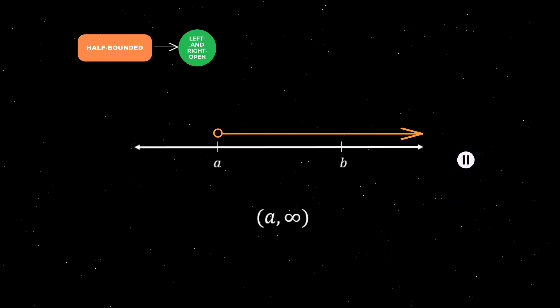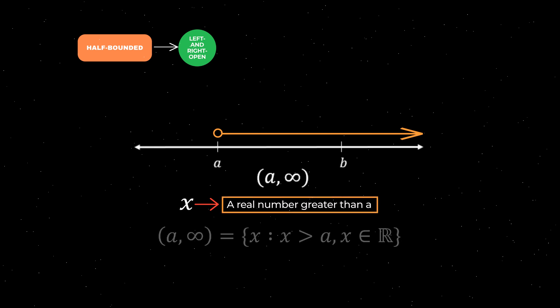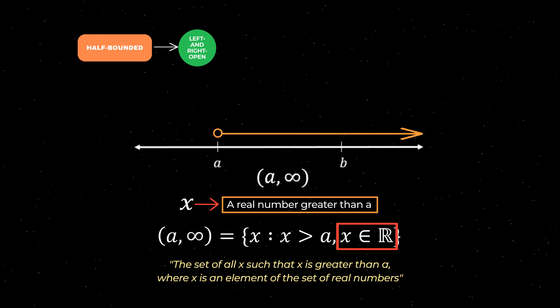To represent this interval in set builder notation, we first define a variable X as a real number greater than A, and then we build the number set using curly brackets as shown here. Therefore, this half bounded left and right open interval in set builder notation can be described as the set of all X such that X is greater than A, where X is an element of the set of real numbers.